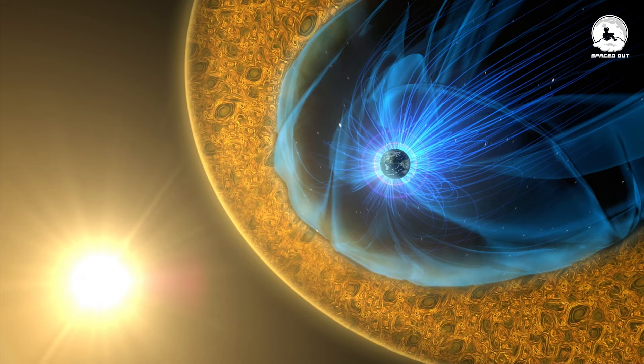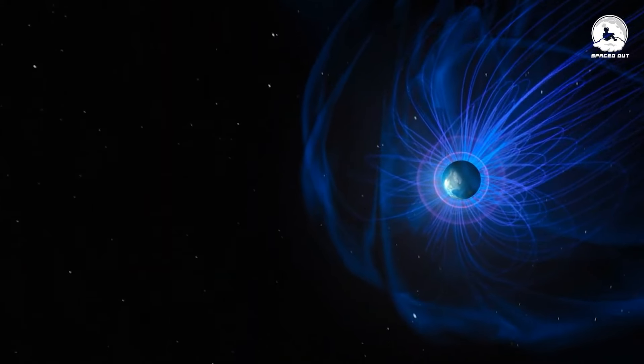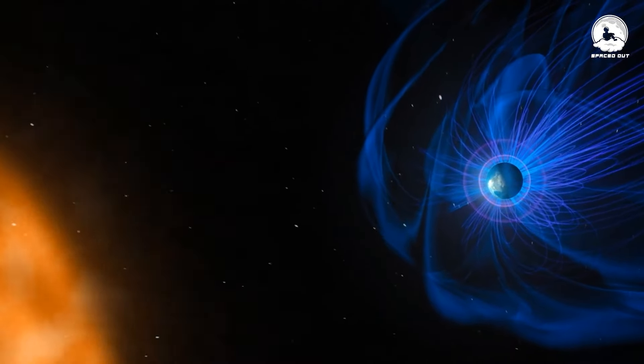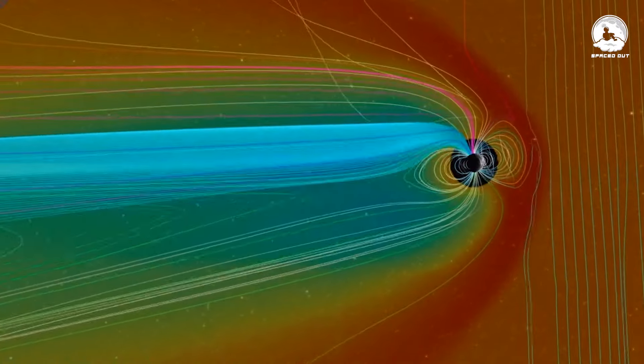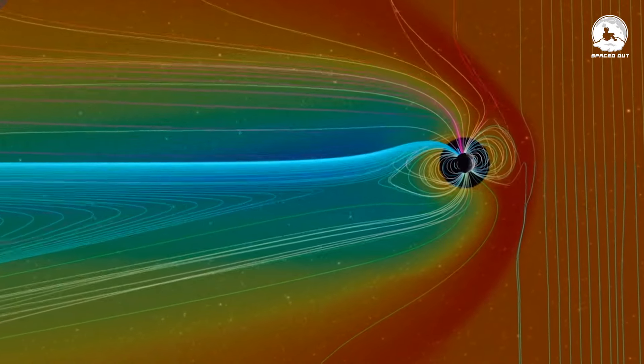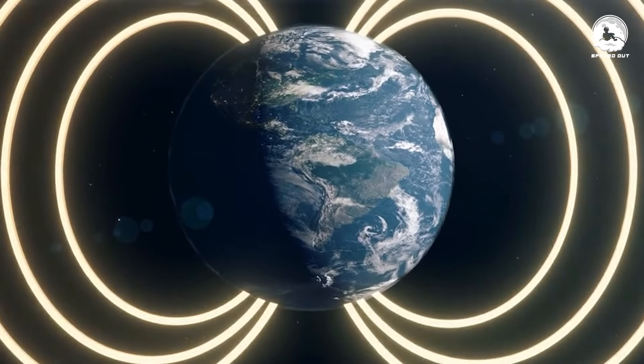This magnetic field plays a pivotal role in preserving our planet by deflecting solar winds, preventing them from eroding the Earth's atmosphere and causing potential catastrophic impacts. However, the twist is that the Earth's magnetic field is not static but dynamic, undergoing constant changes and occasional complete reversals.